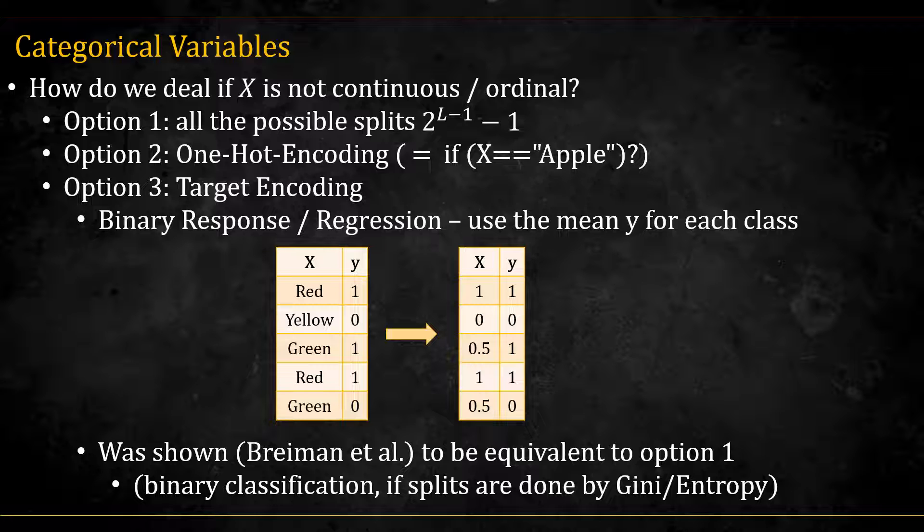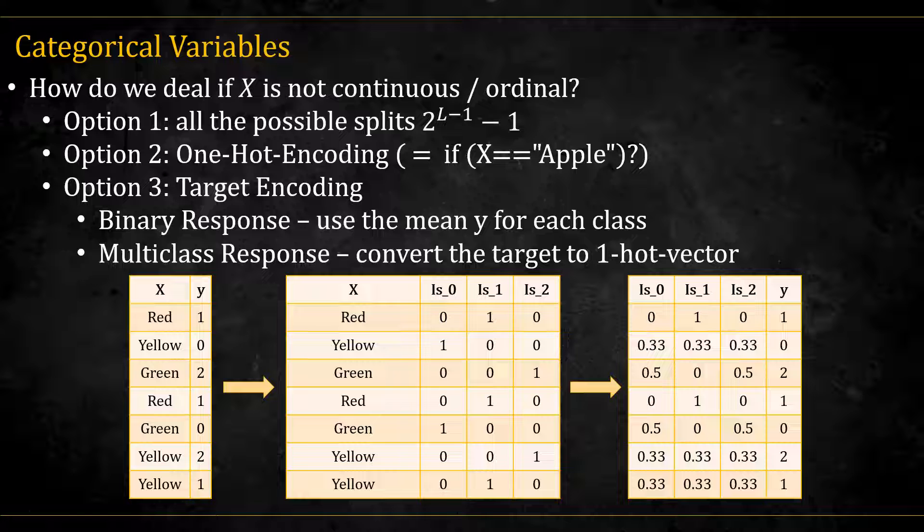A third option is called target encoding. If we have a regression or a binary categorical response, we replace the x value with the average of the y for each category. In this example, red has a mean y of 1, yellow has a mean y of 0, and green has a mean y of 0.5. Surprisingly, it was shown that this is actually equivalent to option 1 under some conditions. There is also an extension of this to multiclass y. We first convert the response, the y, to one-hot encoding. And then we create target encoding for each one of these binary variables and replace the categorical x variable with these. Note that in the end, we keep the original y.